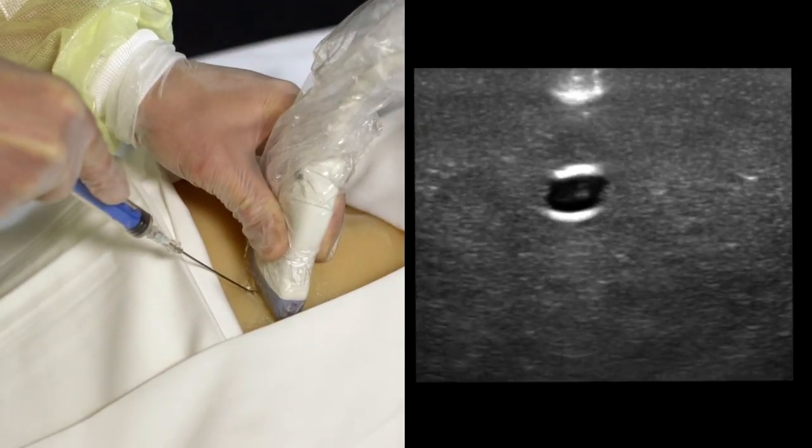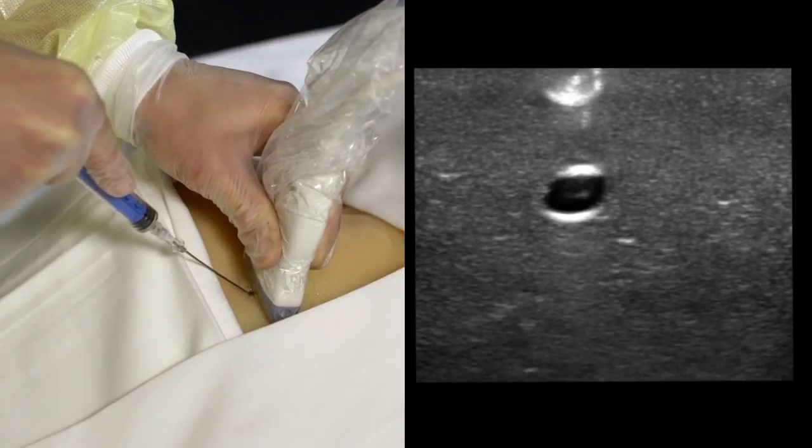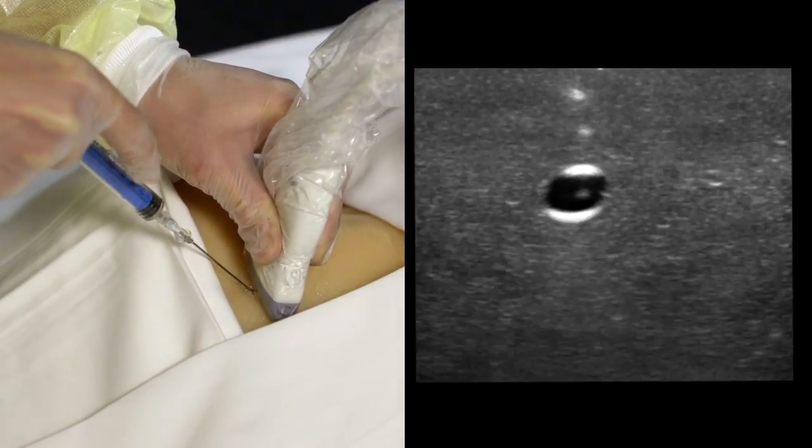Once through the skin, change your needle angle to a shallower angle. Keep the vein in the center of your screen. The needle tip appears as a small, bright, echogenic spot.